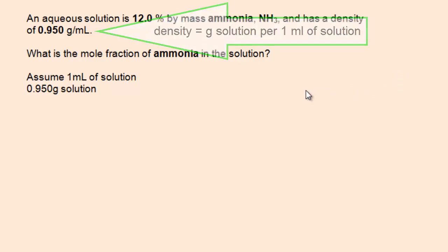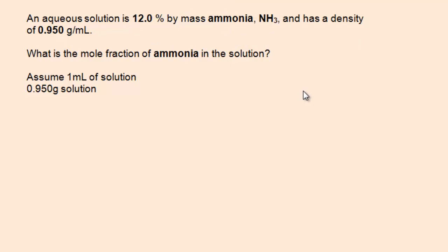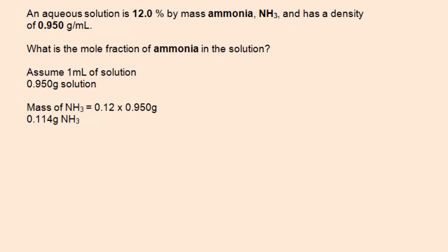And from this quantity of solution, we could proceed to calculate the actual mass of ammonia. The mass of ammonia can be calculated by using the 12 percent and the mass of solution. So the mass of ammonia is 0.114 grams.